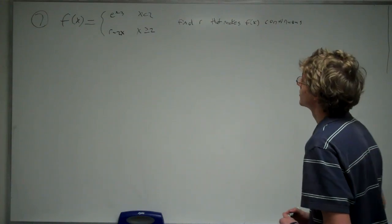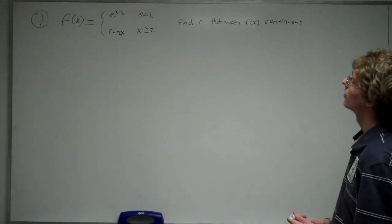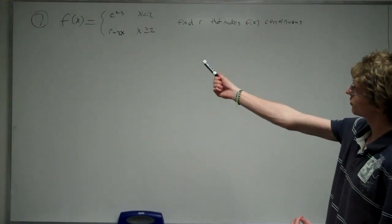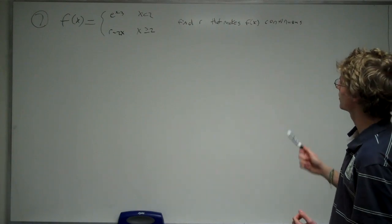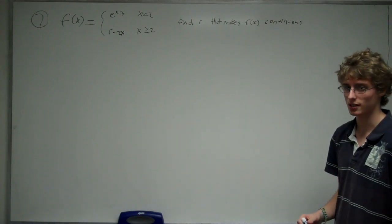Alright, and the question reads: you've got a piecewise function here, and you want to find R that makes this piecewise function continuous.